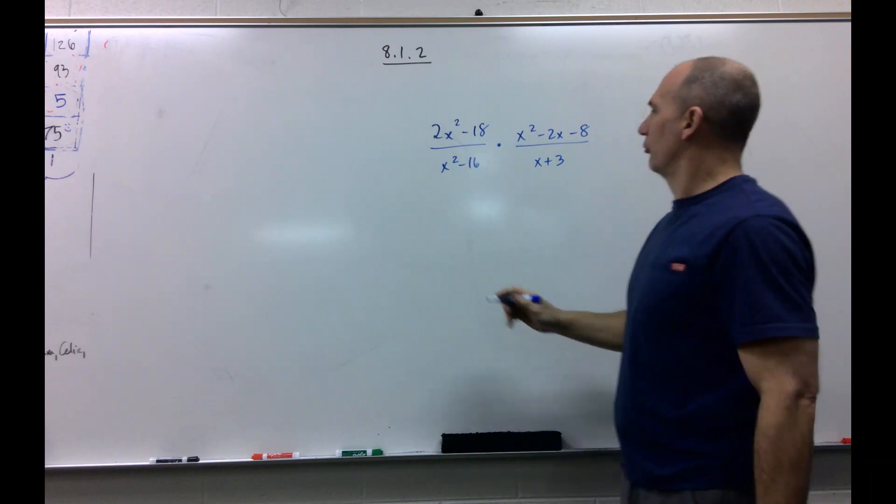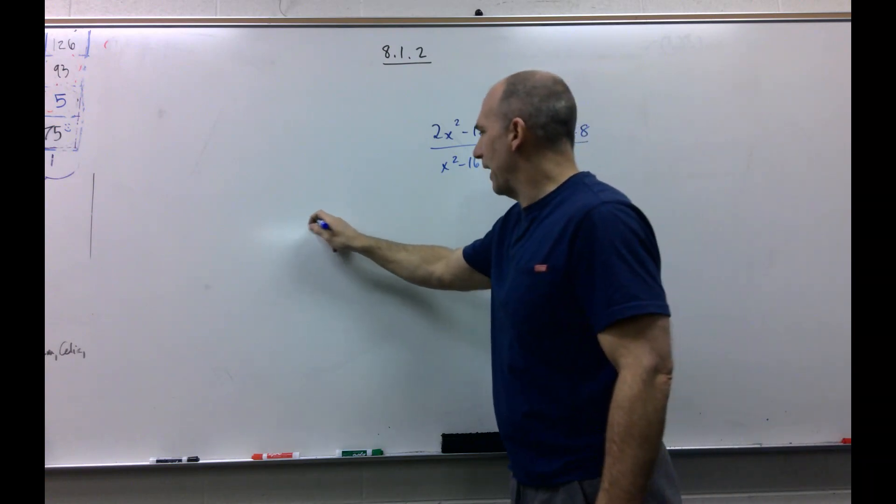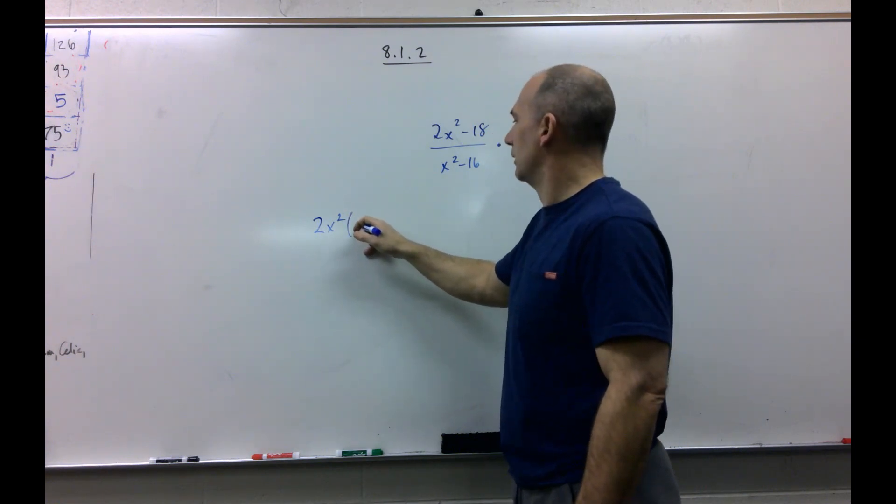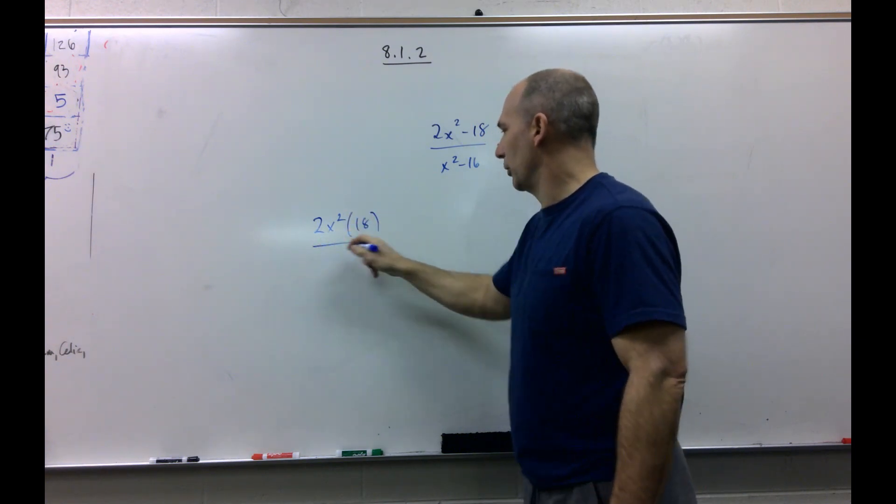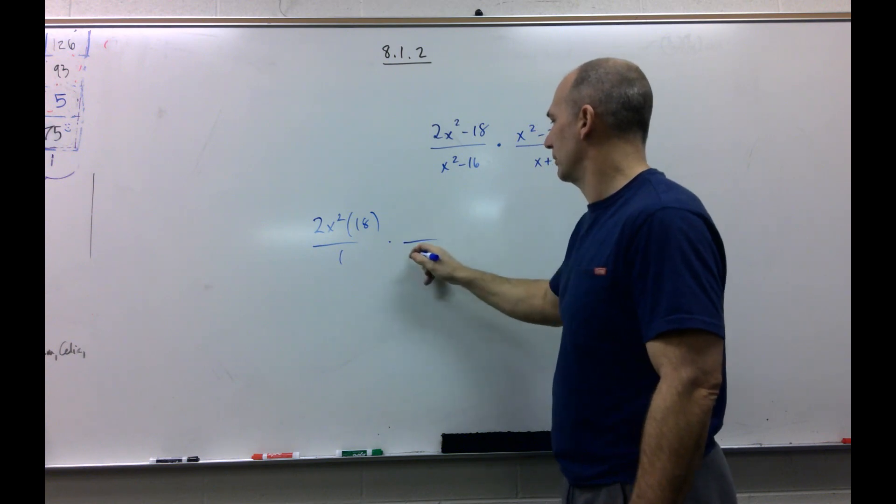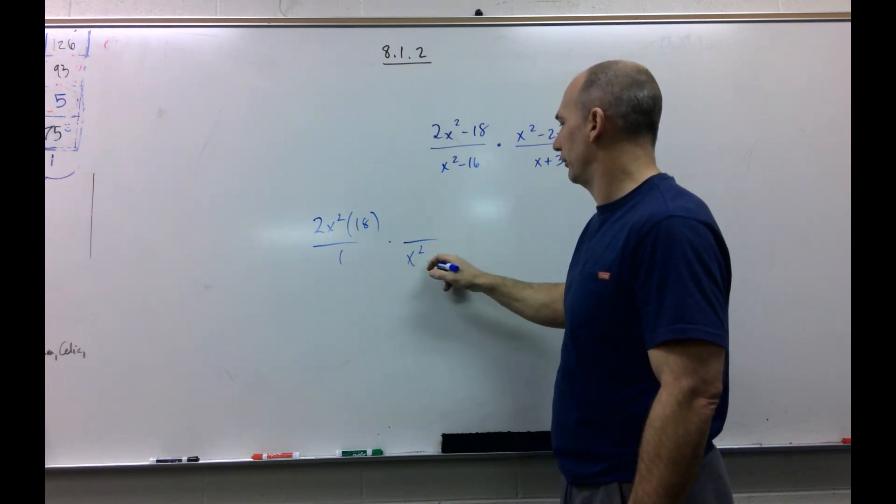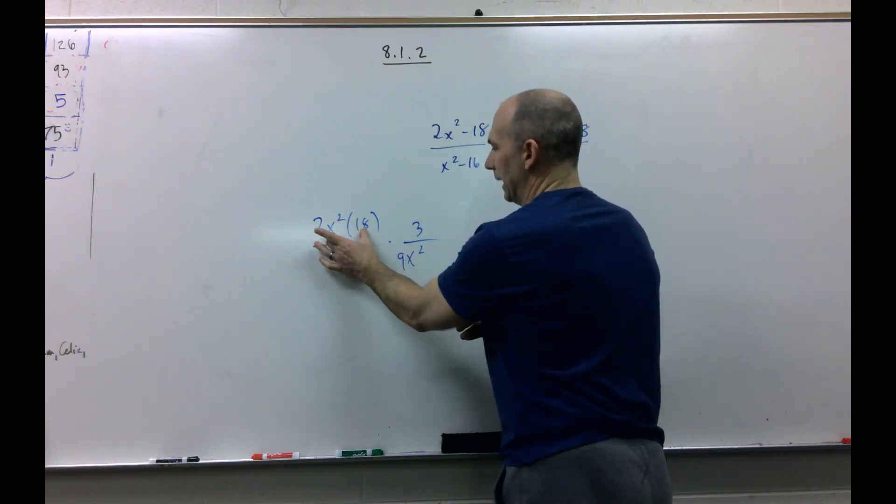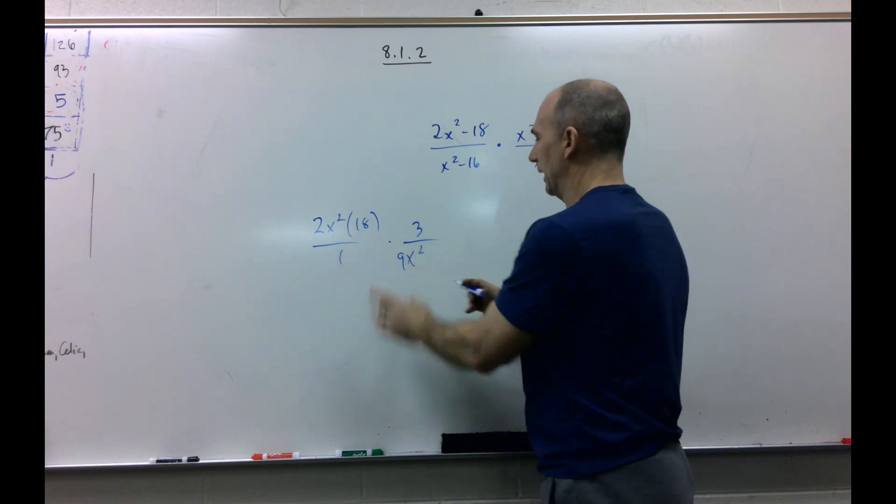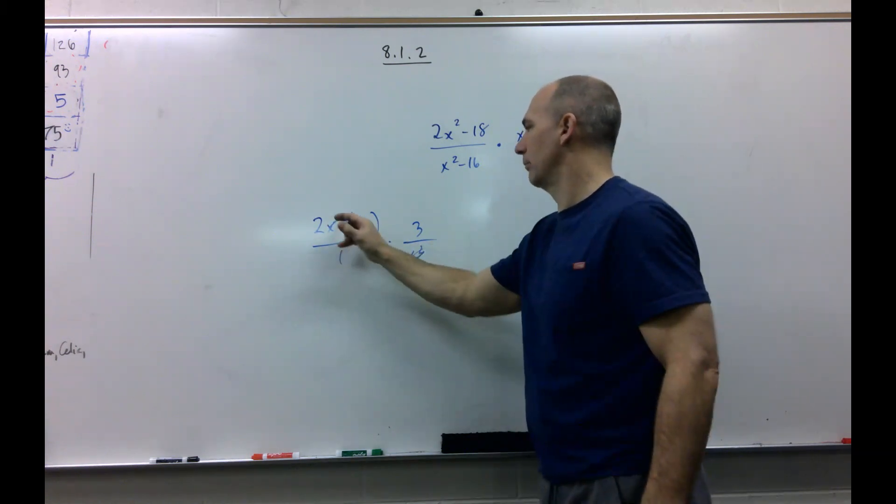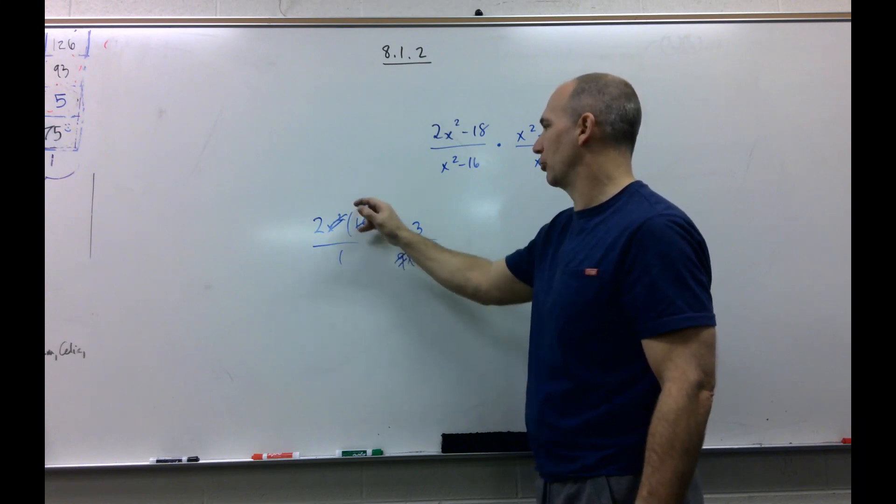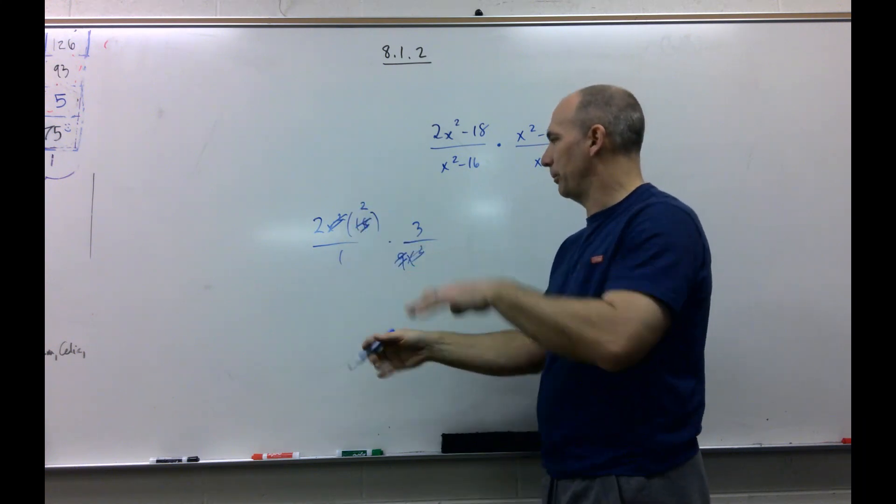Now, just so you know, if I have this: 2x squared times 18 over x squared times 3. See, this is all connected by multiplication. I could cross those out. I could go, hey, 9 goes into 9 once, 9 goes into 18 twice, then I just multiply and I'd get 12.